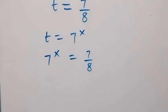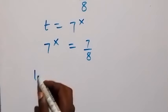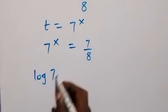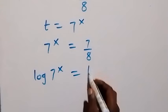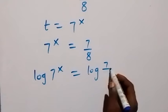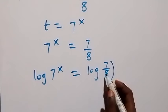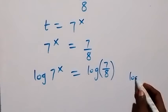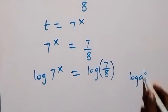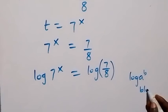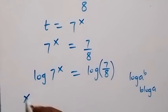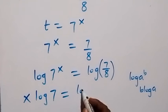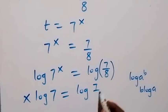From here, let's take the log of both sides. We have log of 7 raised to power x, equals log of 7 over 8. We apply the power law of logarithms, where log of a raised to power b is the same as b times log a — that is, b can come to the front. So similarly we have x times log 7, now equals log of 7 over 8.